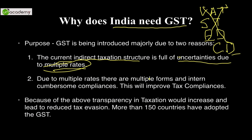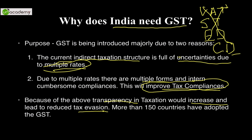The second purpose is that due to multiple rates there are multiple forms, which increases the cumbersomeness of the entire taxation structure. Tax compliances would reduce because we have just one single tax structure, that is GST. Because of this, a lot more transparency would be induced, and the more the transparency in the taxation regime, the more we can reduce tax evasion — where people earn income and do not disclose it. That would be stopped because of GST.